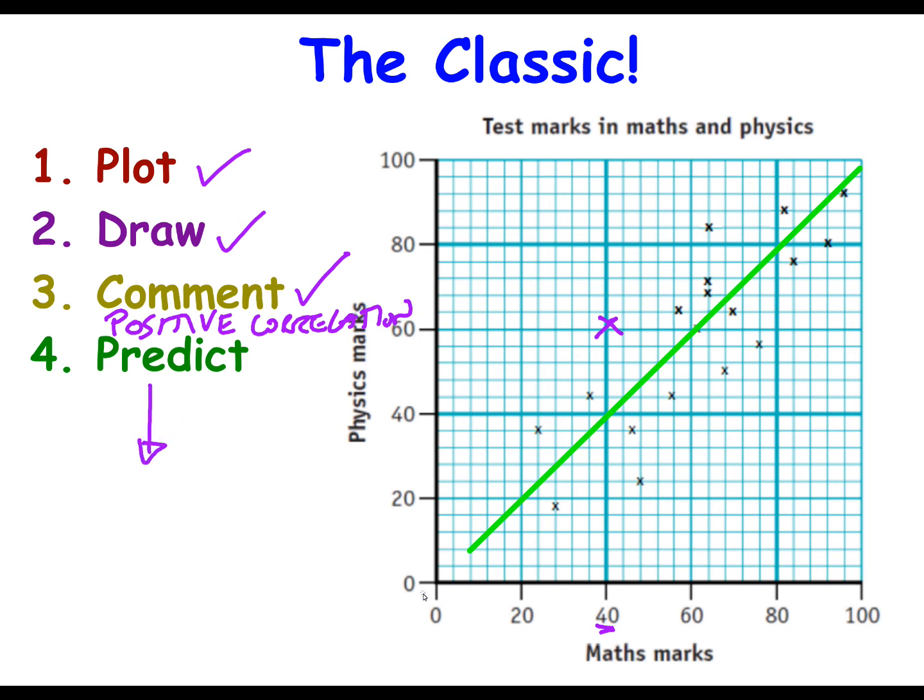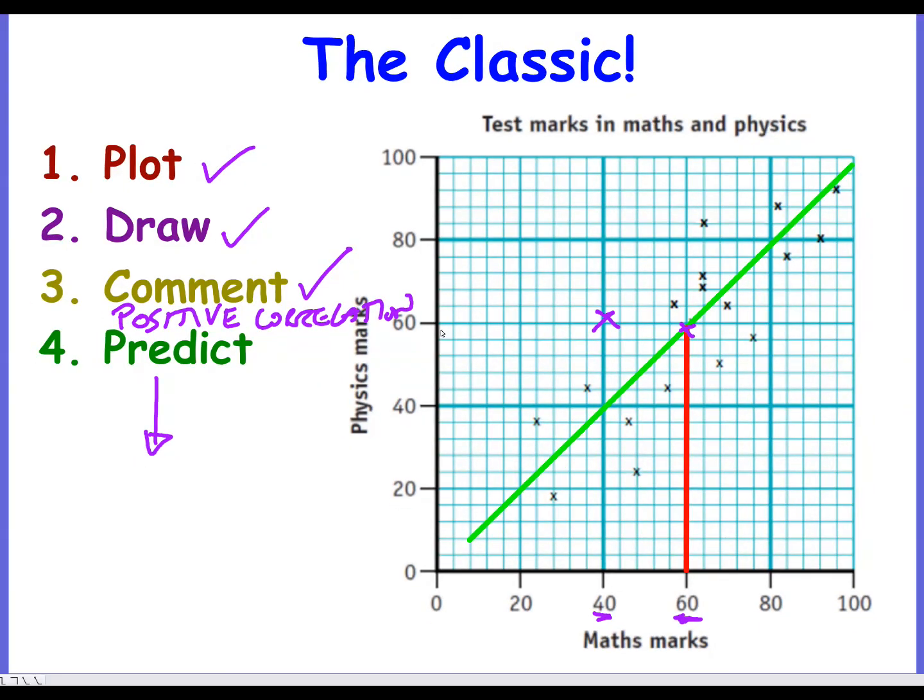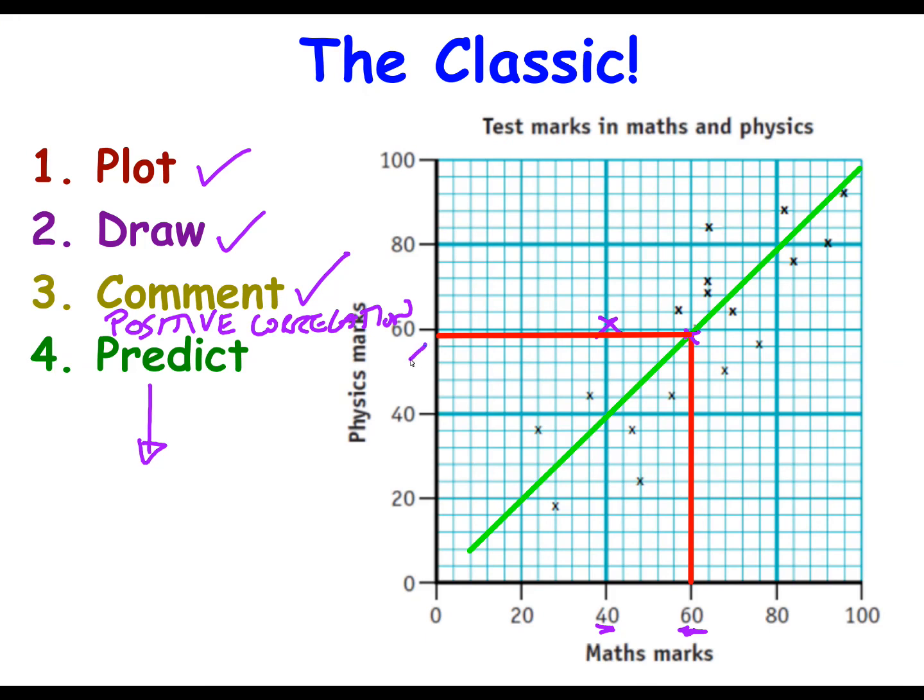And then finally, they will get you to predict something from your line of best fit. So let's just say Andrew took the maths exam and scored 60 marks. What would you expect him to get in his physics exam? So what you need to do is draw a line up from 60 marks and hit your line of best fit here. Then from there, draw a straight line across to his physics mark. And his physics mark would be just below 60. Let's call it 58 marks. So they give you something that you have to plot onto your line of best fit. Read across to get your predicted mark for physics.